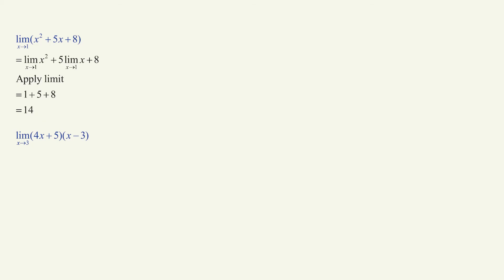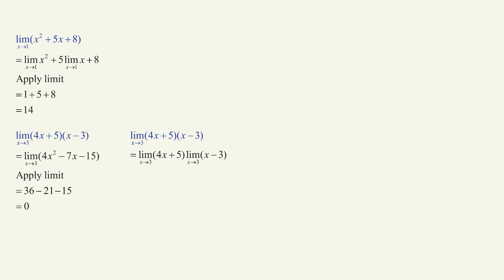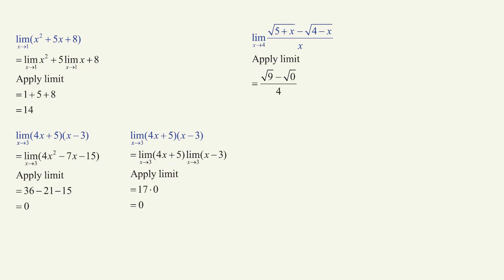Limit as x approaches 3 for 4x plus 5 times x minus 3. This expression can be distributed to get 4x squared minus 7x minus 15, then apply the limit to get 0. A wiser way: think of these as f of x and g of x — limit can go to both, then apply the limit to get 17 times 0 which is 0, so you do not have to do distribution. Limit as x approaches 4 of root of 5 plus x minus root of 4 minus x, all over x — limit goes to both numerator and denominator, giving root 9 which is 3, minus 0 in the numerator, and 4 in the denominator. So the limit is 3 over 4.